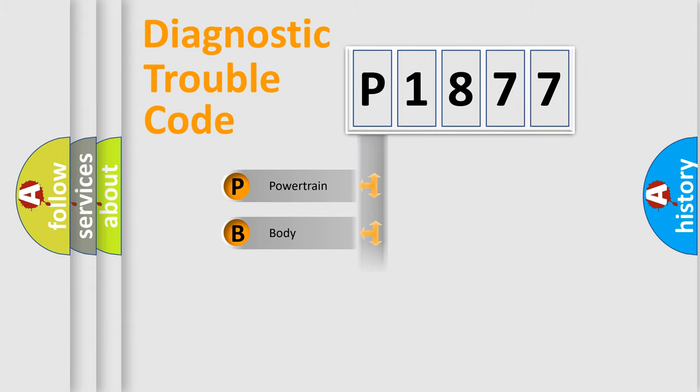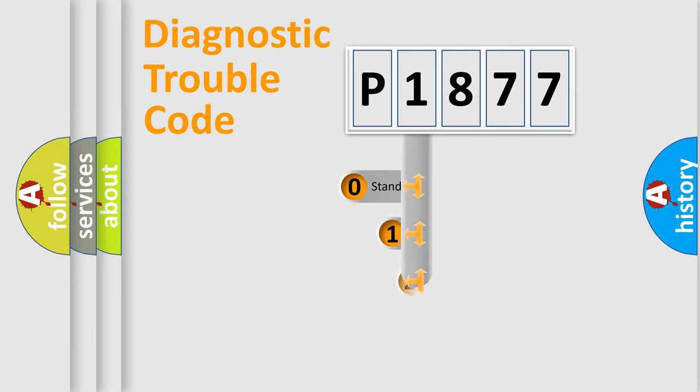We divide the electric system of automobile into four basic units: Powertrain, Body, Chassis, and Network. This distribution is defined in the first character code.